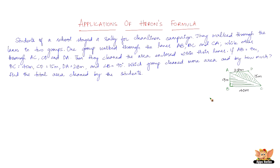We also have a right-angled triangle here. The best thing about a right-angled triangle is you've got the height. The 9-meter side is the height of the right-angled triangle if you consider 40 meters the base, or vice versa. So first we find the area of triangle ABC using the base and height formula, then use that to find AC, and then solve for the area of the other triangle to compare which group cleaned more.